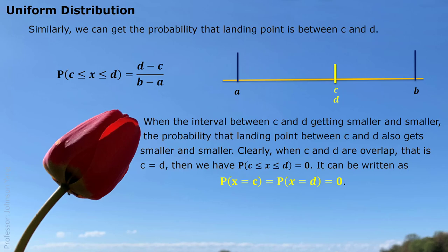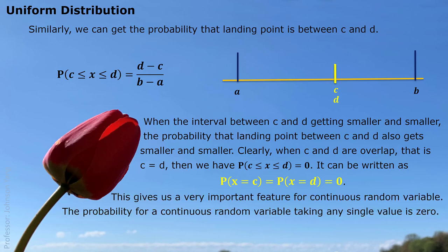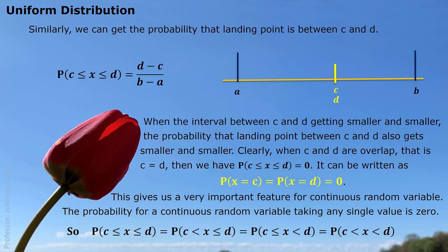We can also write down that the probability x lands on exactly c, or exactly d, is zero. This gives us a very important feature for a continuous random variable: the probability for any continuous random variable taking any single value is zero. So when we talk about an event, the border can be ignored — you can either include the border or not, and the probability is not affected.